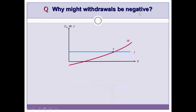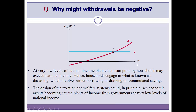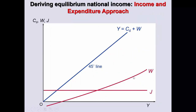There is a quick question here: why might withdrawals be negative? If you look at the diagram, the withdrawals line actually dips below the X-axis at very low income levels, implying negative withdrawals. I will reveal the answer now — you can pause to think about it if you like — but given time constraints we'll move ahead to the income and expenditure approach.